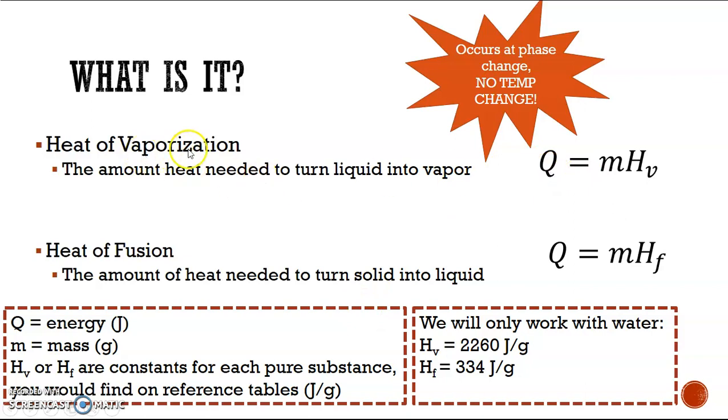So we've got two equations here. For the heat of vaporization, turning a liquid into a vapor, Q equals m times Hv. And for heat of fusion, when we turn a solid into a liquid, we have Q equals m times Hf. So what are these letters?